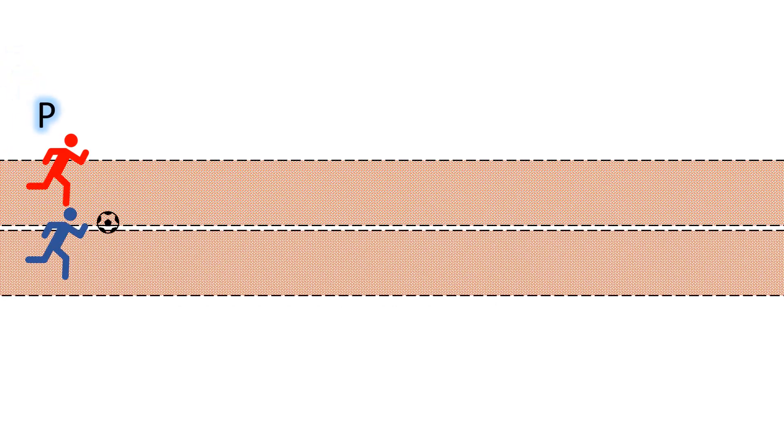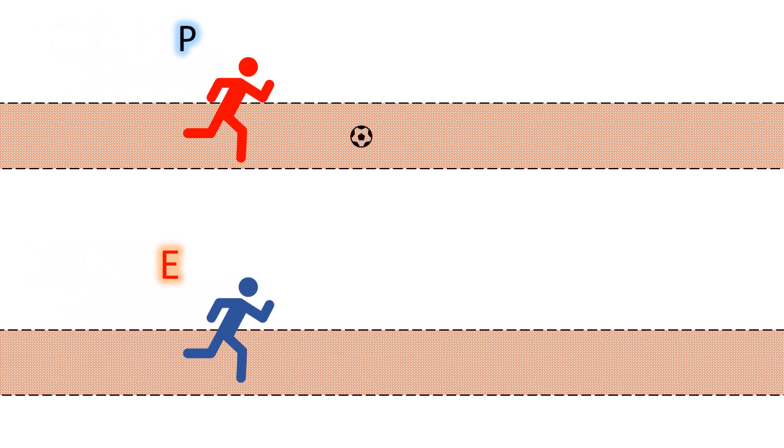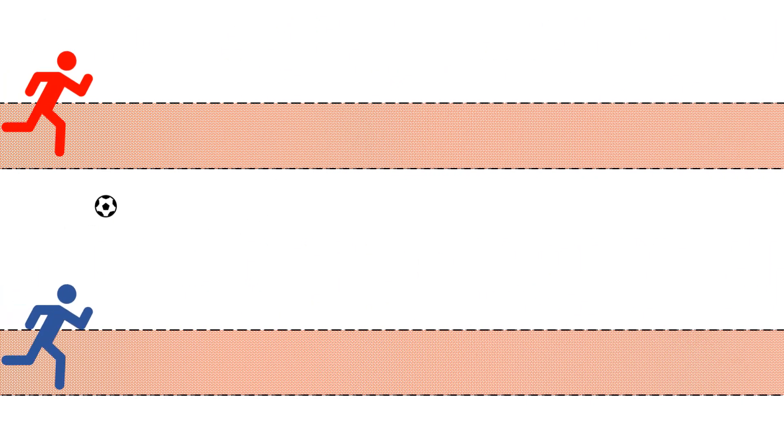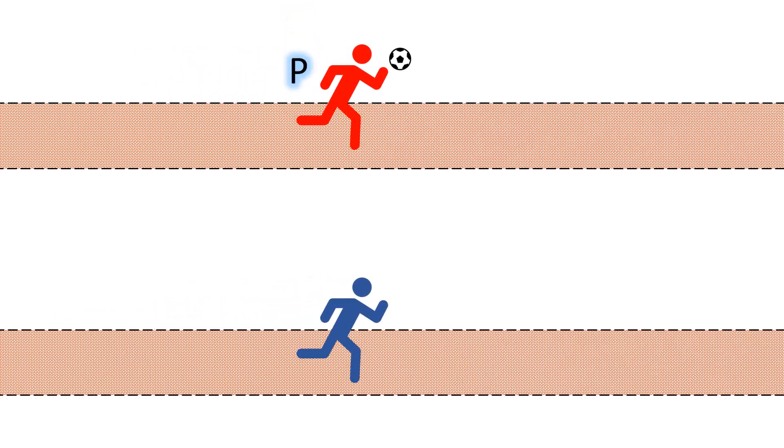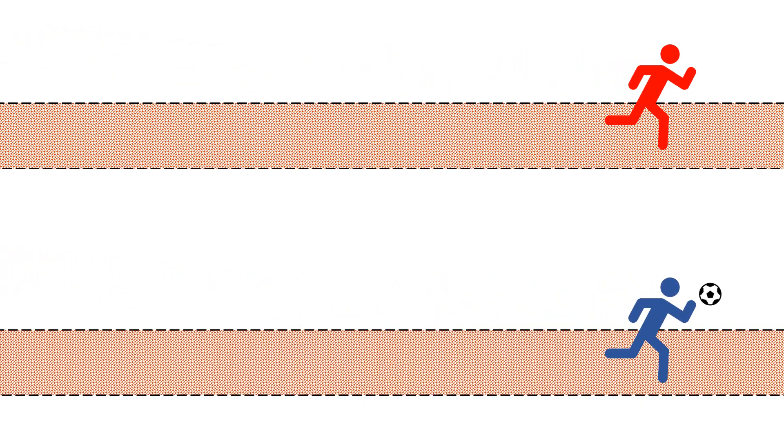Imagine two persons, one P and another E, moving in a straight line. Why I name them so, I will tell you later. Their tracks are placed apart. They toss a ball between them as they run. Persons P, E, and the ball, all three of them move in the same direction and at the same speed or velocity. So, the movement is synchronized.